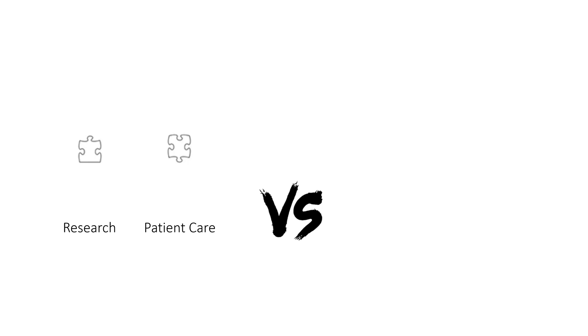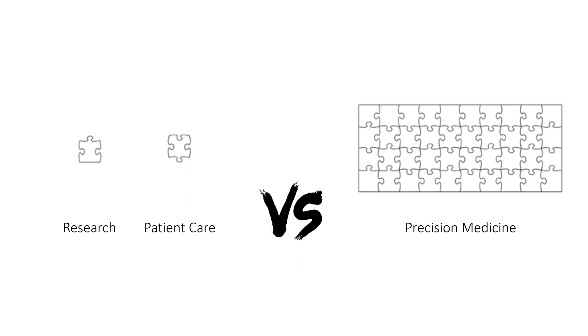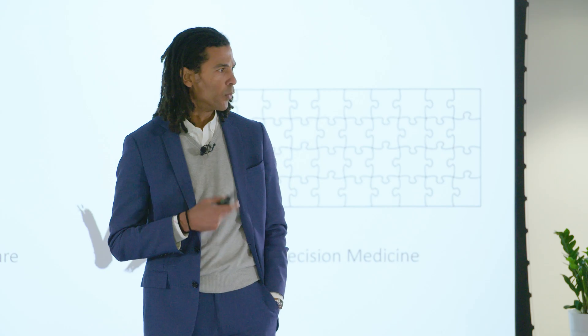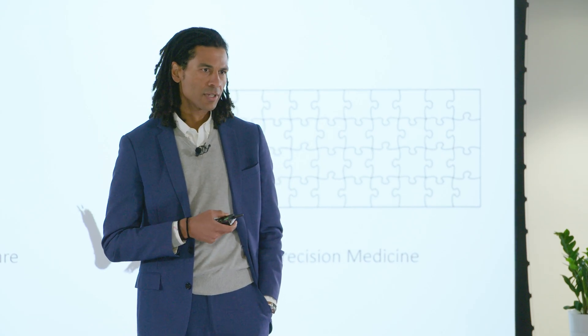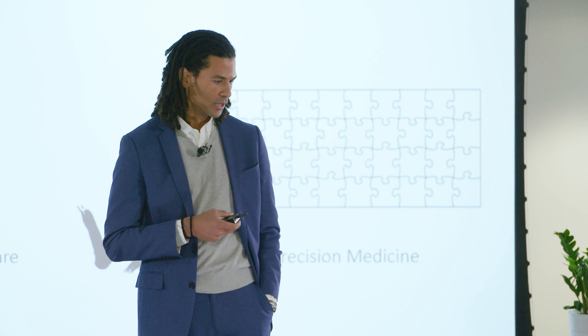The first barrier is a philosophical one. In our current paradigm, we consider research and patient care to be two completely separate use cases. And what that means is we develop clinical data structures that don't facilitate research, which is a problem. Because in a precision medicine paradigm, research and clinical care have to converge. It's only when you are actively studying everyone you're taking care of that you can understand why they're different, why that matters, and how you need to adjust standard care to incorporate those differences.